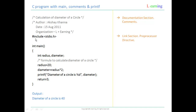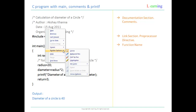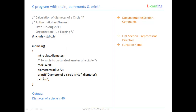Then comes the link section. In this case it is hash include standard input output header file. stdio.h means standard input output header file, and it is a preprocessor directive. For example, if you want to play a song from a particular movie, you need to put that CD into the CD drive first. In the same way, you need to include the preprocessor directive if you want to use a function from it. Here we have used printf, and the declaration of printf is given in the stdio.h file — that is the reason we have included it.